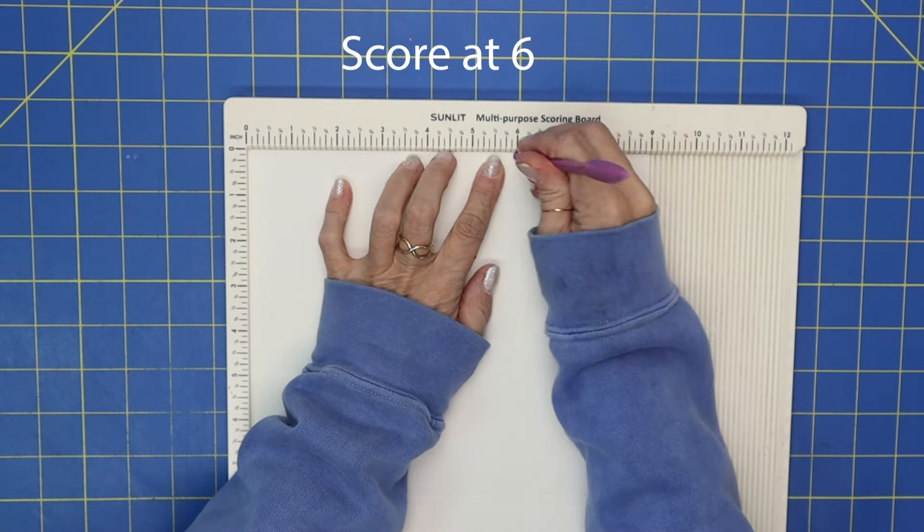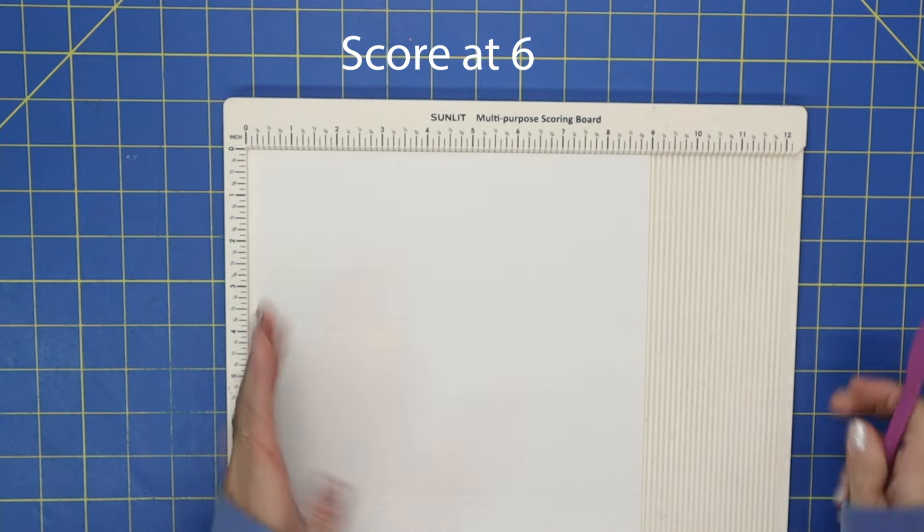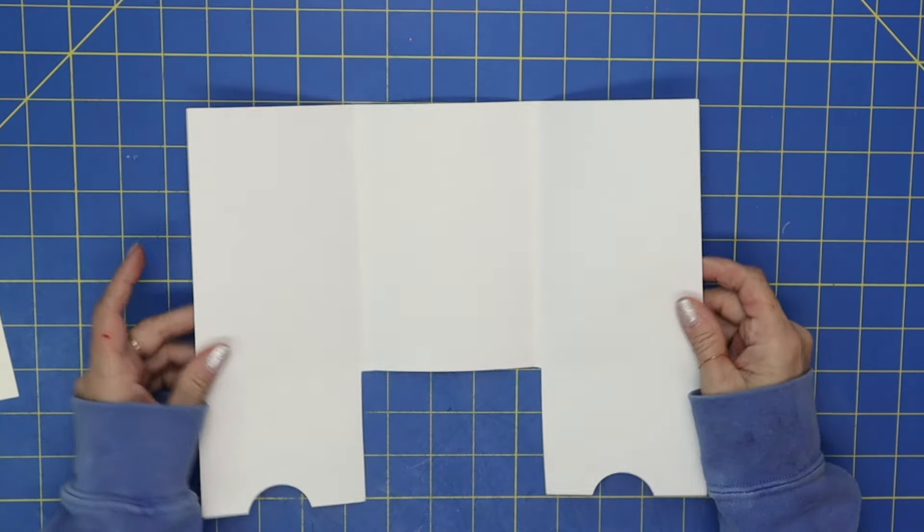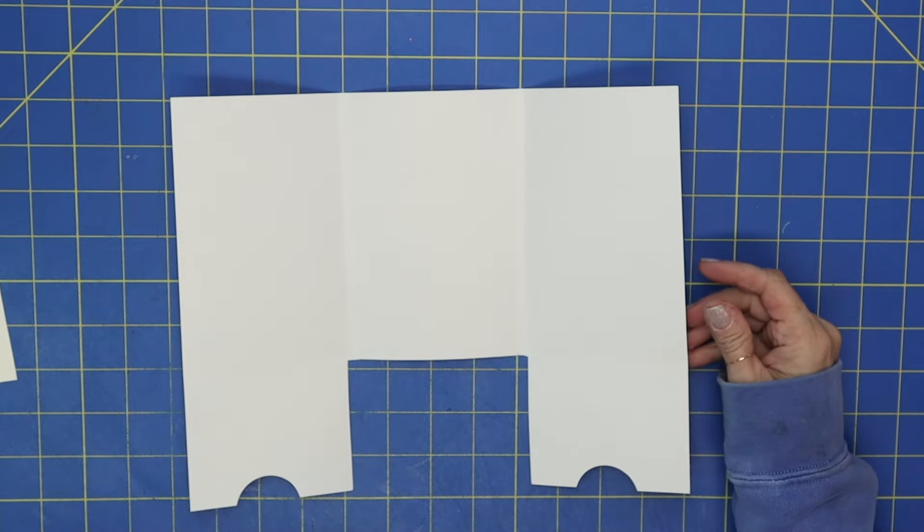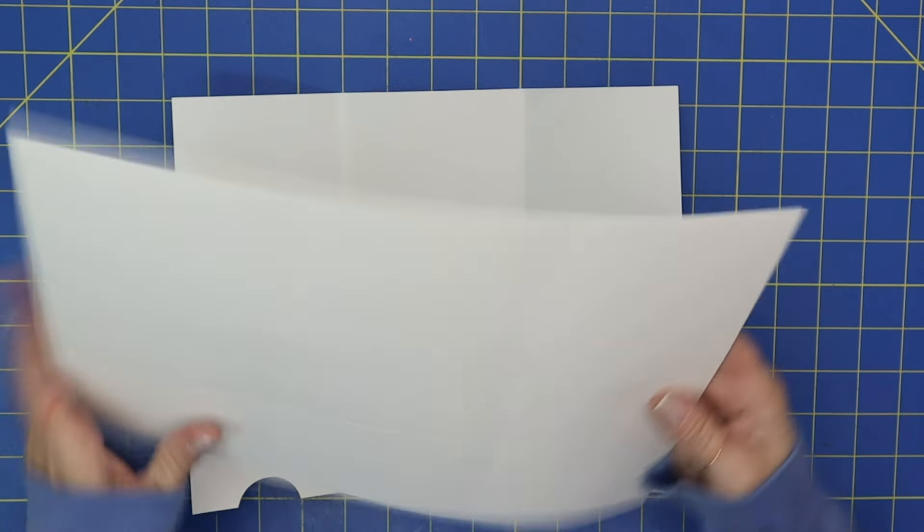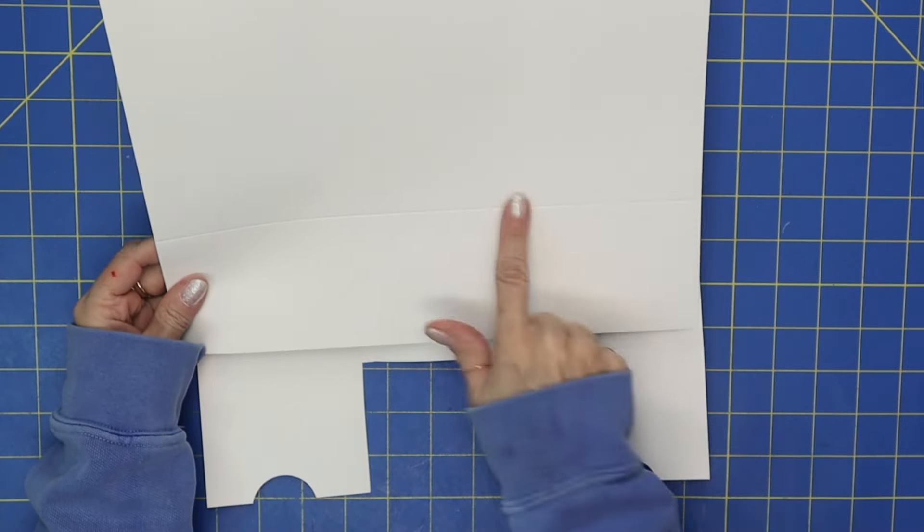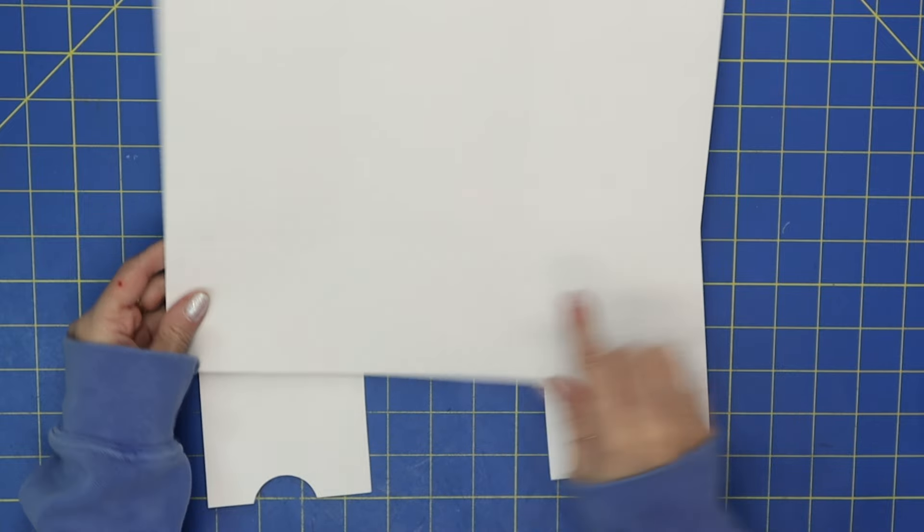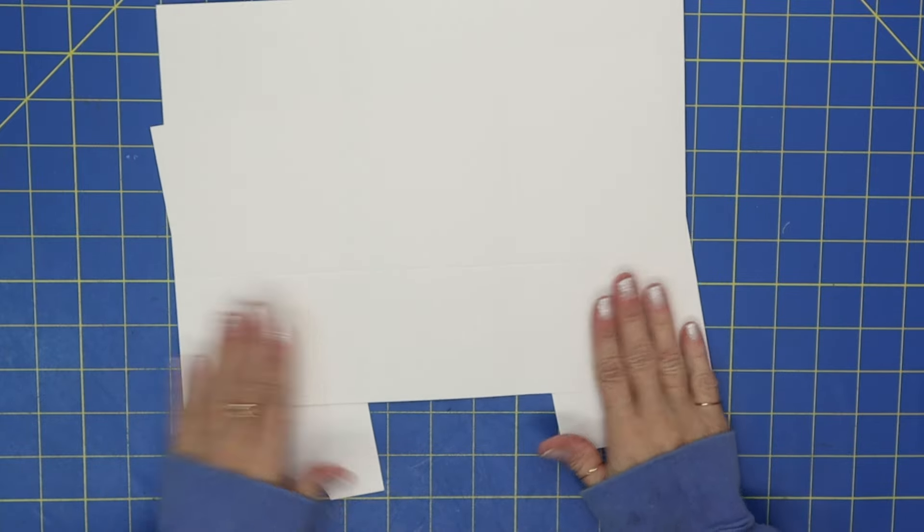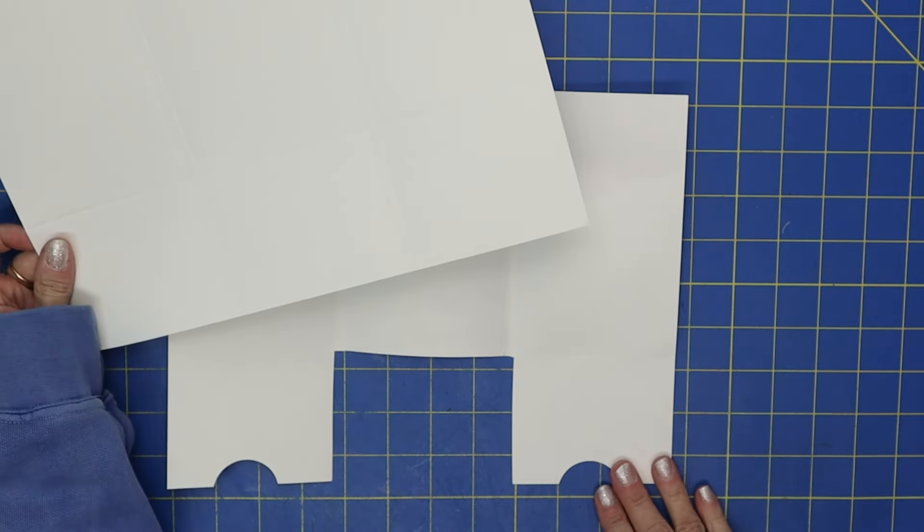I'm just going to do that one more time and we're done scoring. Now I made a little template so you can see kind of what we're going after. Here is the piece that's not cut—so we are going to be cutting out this middle section and then these two little squares are going to be our pockets.